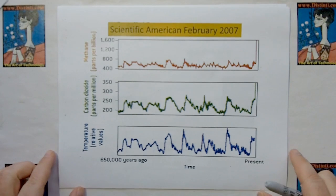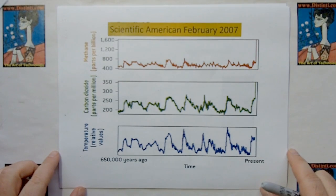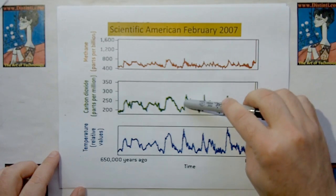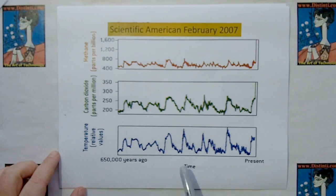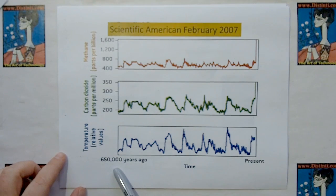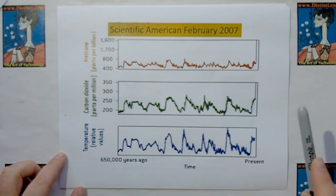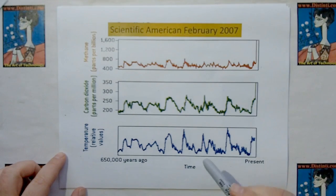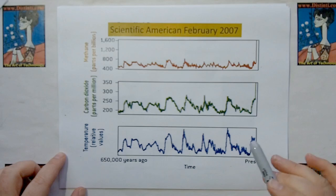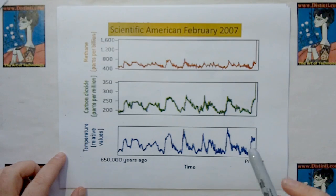This is the Scientific American February 2007 data, which shows the methane, carbon dioxide, and temperature in the atmosphere going back 650,000 years. This is measured data, so don't let them talk to you about all kinds of theories and magnification theories and all this stuff. This is the measured data of the real system.